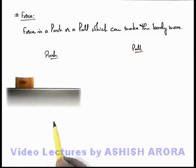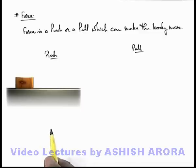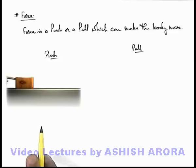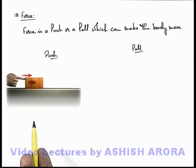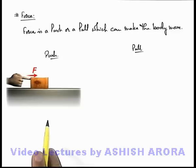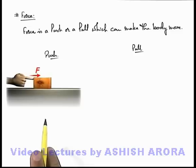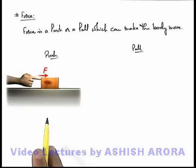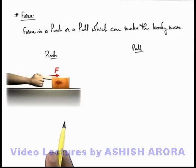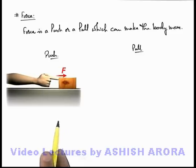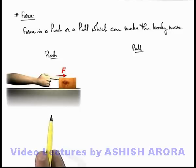Here you can see a surface on which a block is placed. When the block is pushed by a finger, you can see the finger applies a force, which is denoted by the arrow and the letter F. Due to the application of this force on the block, the block starts moving in the direction of the force. So when we push a body, the body starts moving in the direction of the applied force.